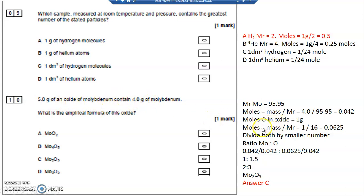So 1 gram of the oxide, moles is mass divided by MR. 1 divided by the mass of an oxygen atom is 16 equals 0.0625. So that's the ratio of molybdenum to oxygen.